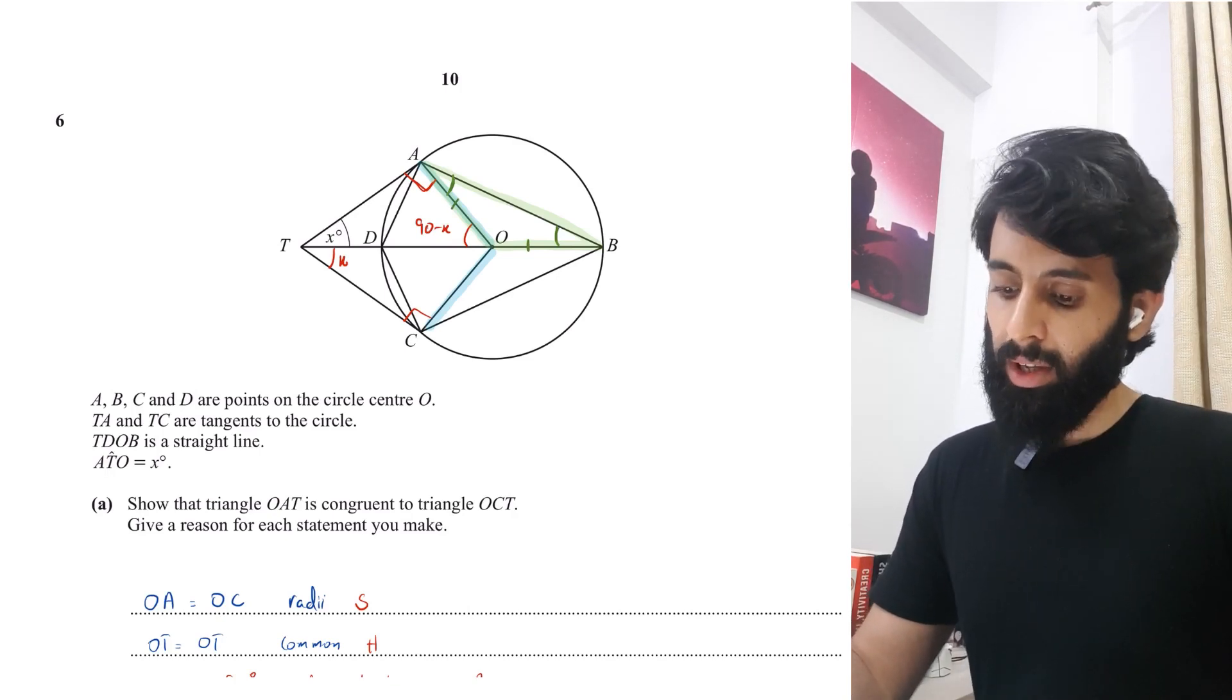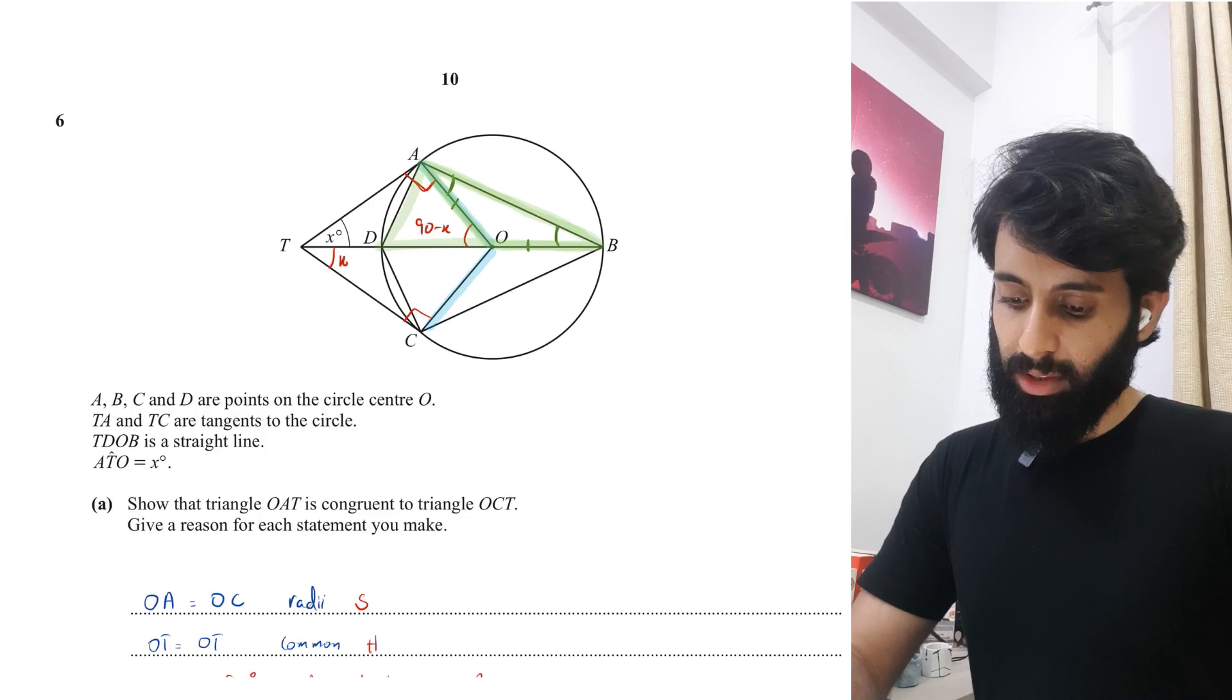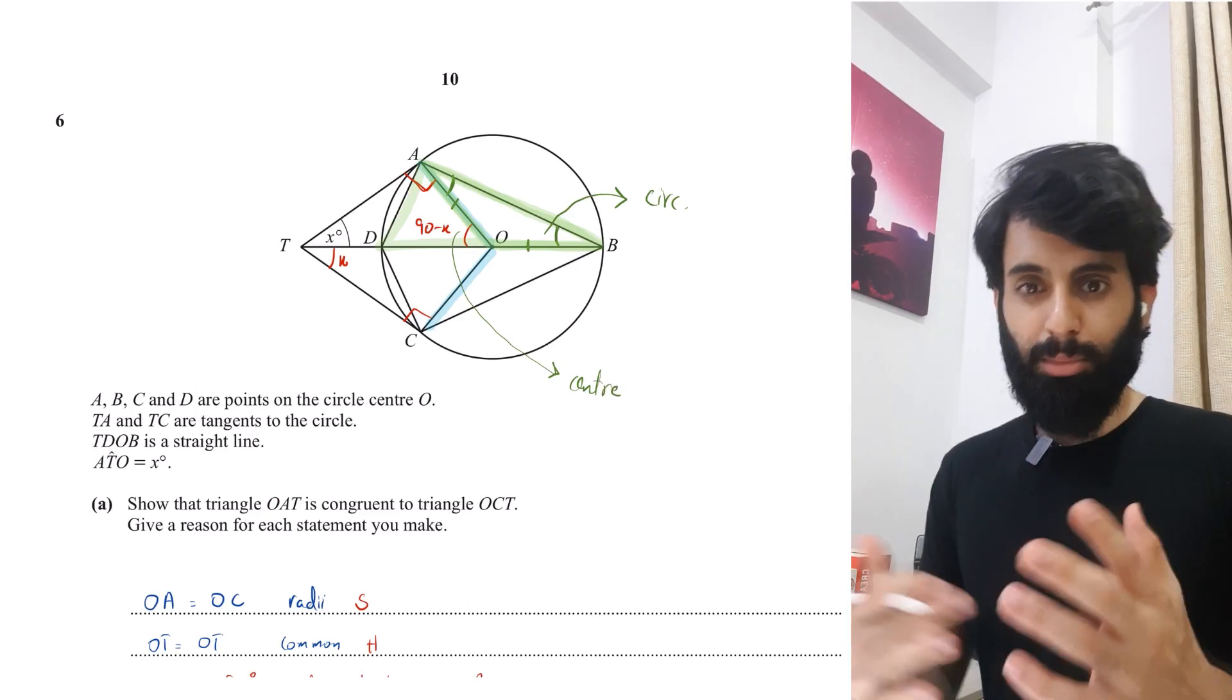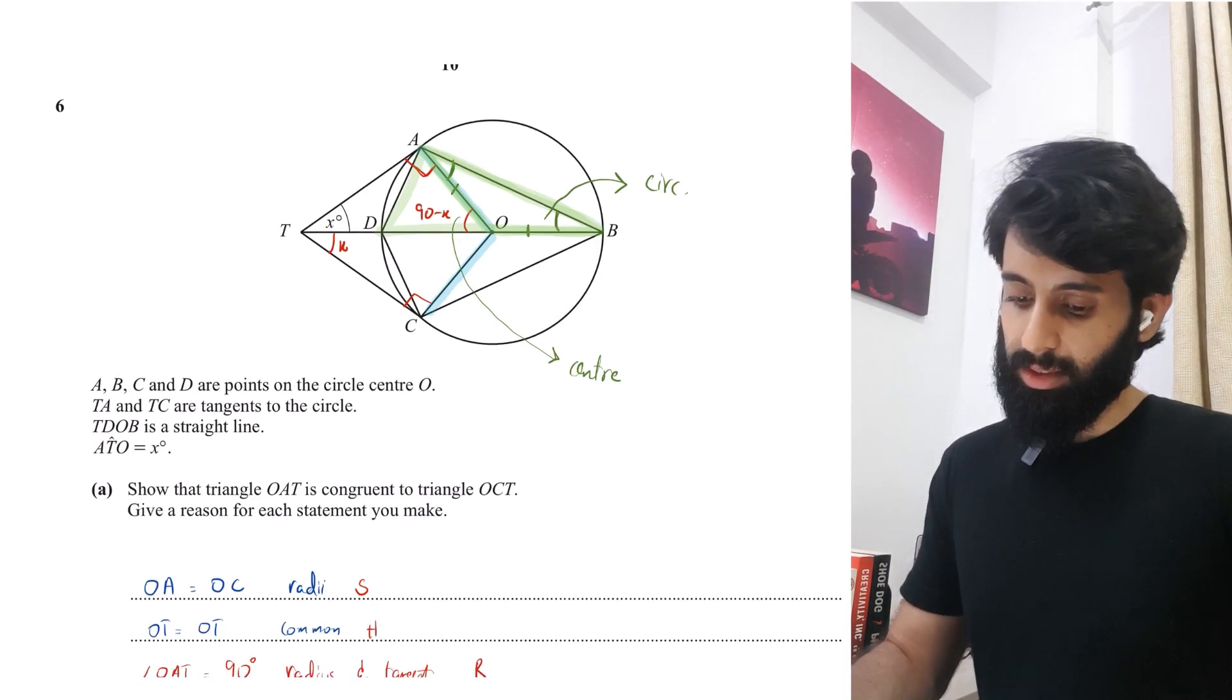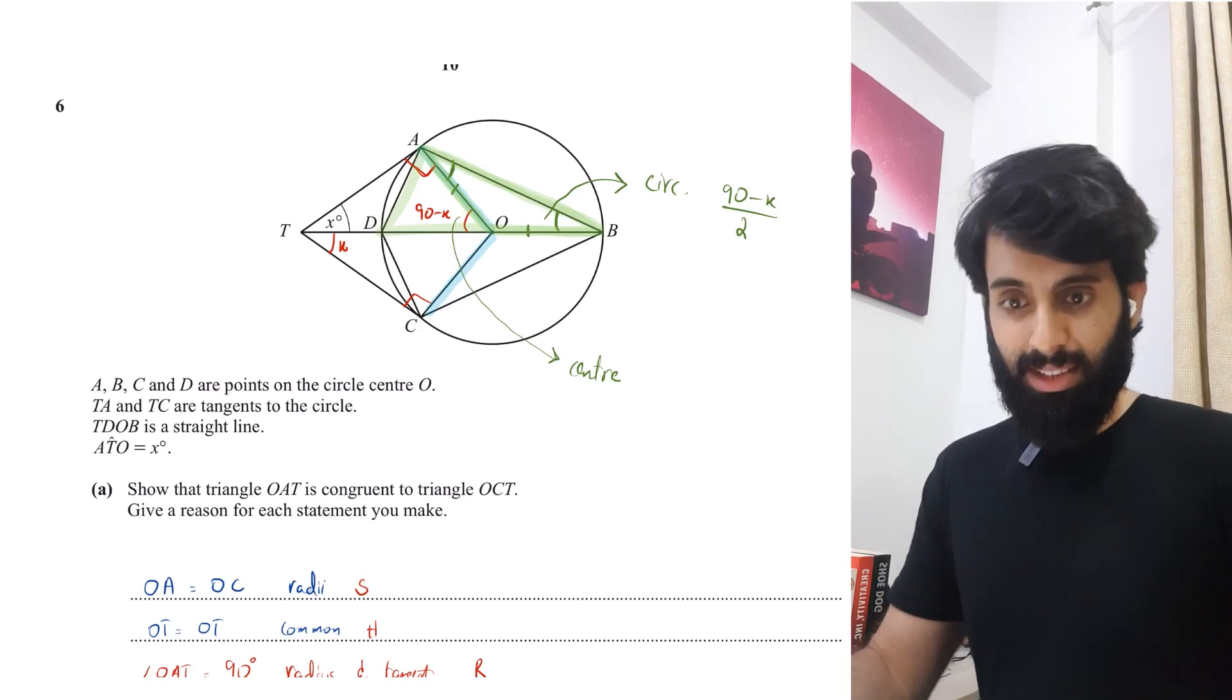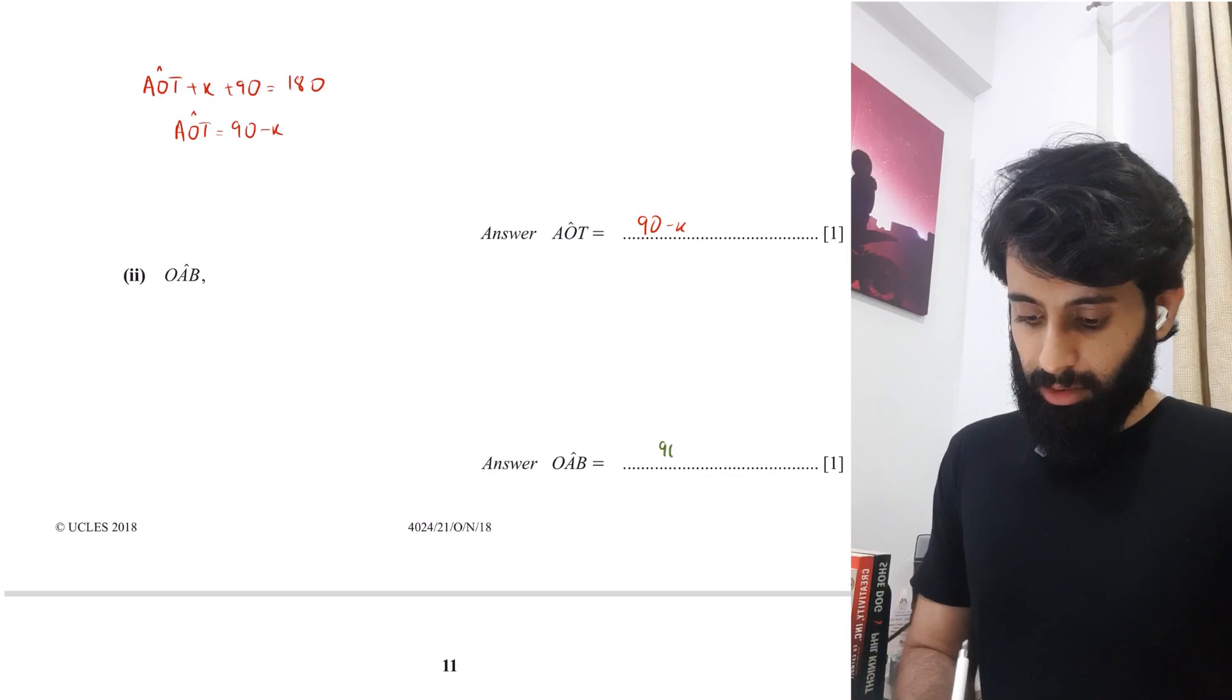If you focus on this part of the shape, you will realize that there is a property that can be applied here. Angle ABO is basically the angle at the circumference. And 90 minus X is the angle at the center. The property that links the two is angle at the center is twice the angle at the circumference. So the angle I want here is 90 minus X divided by 2. They're both going to be the same because it's an isosceles triangle. So this right here will also be 90 minus X upon 2.